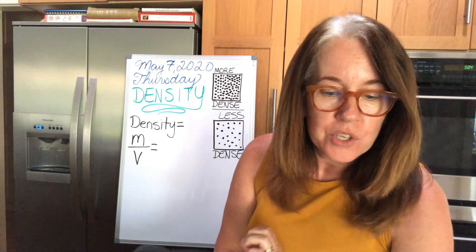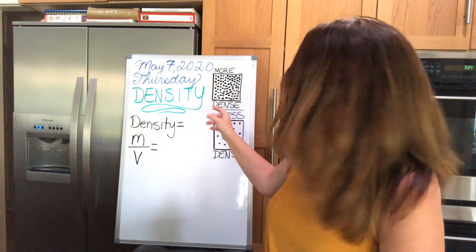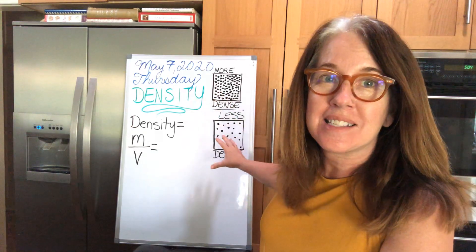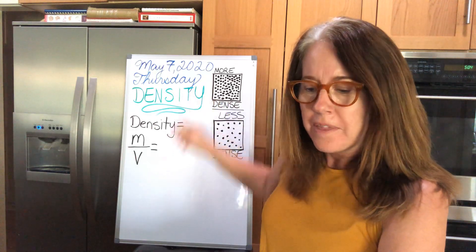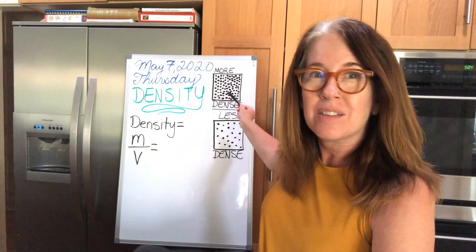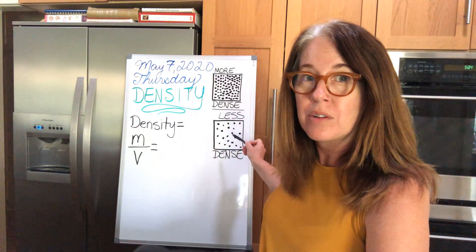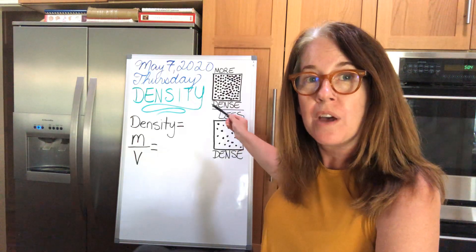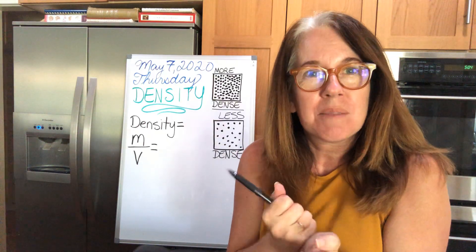All right, so let's get started. We're going to talk about what density really means. If you see right here behind me, I've got two squares drawn. The first one says more dense, and the one underneath says less dense. The top one has a whole bunch of particles that are very tightly packed together with almost no room in between them. But the one down here, the particles are really far apart with a lot of room for more things to fit. So what we're mostly talking about is how much something is packed together.